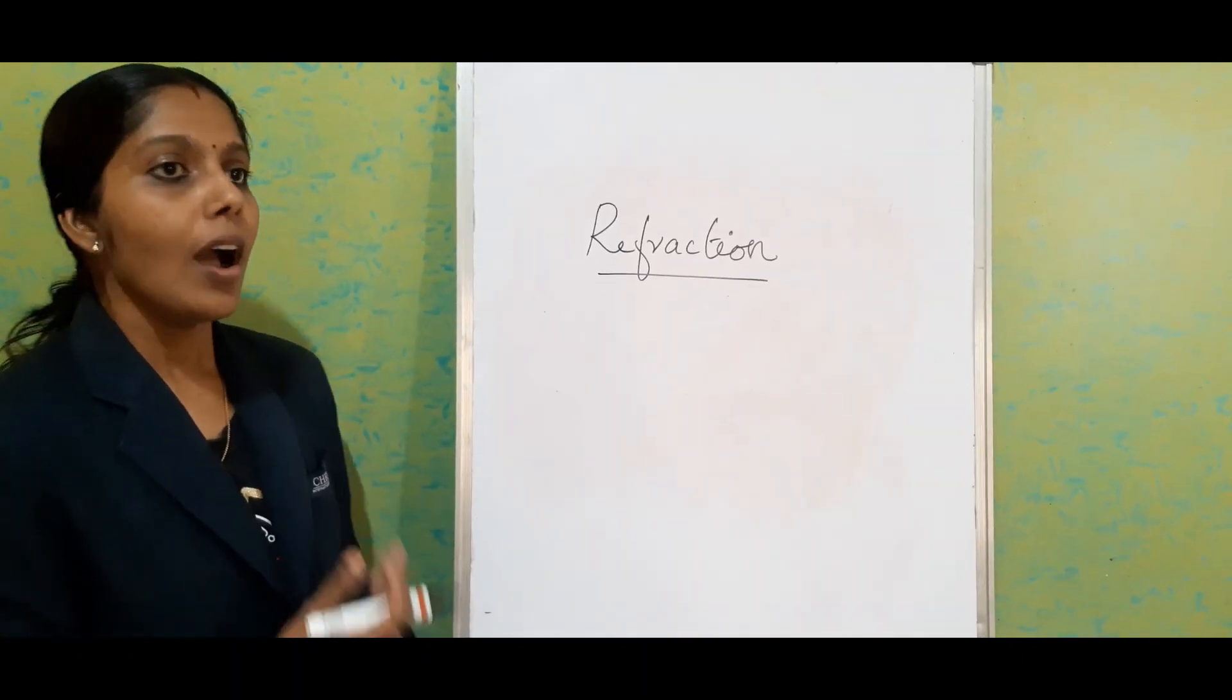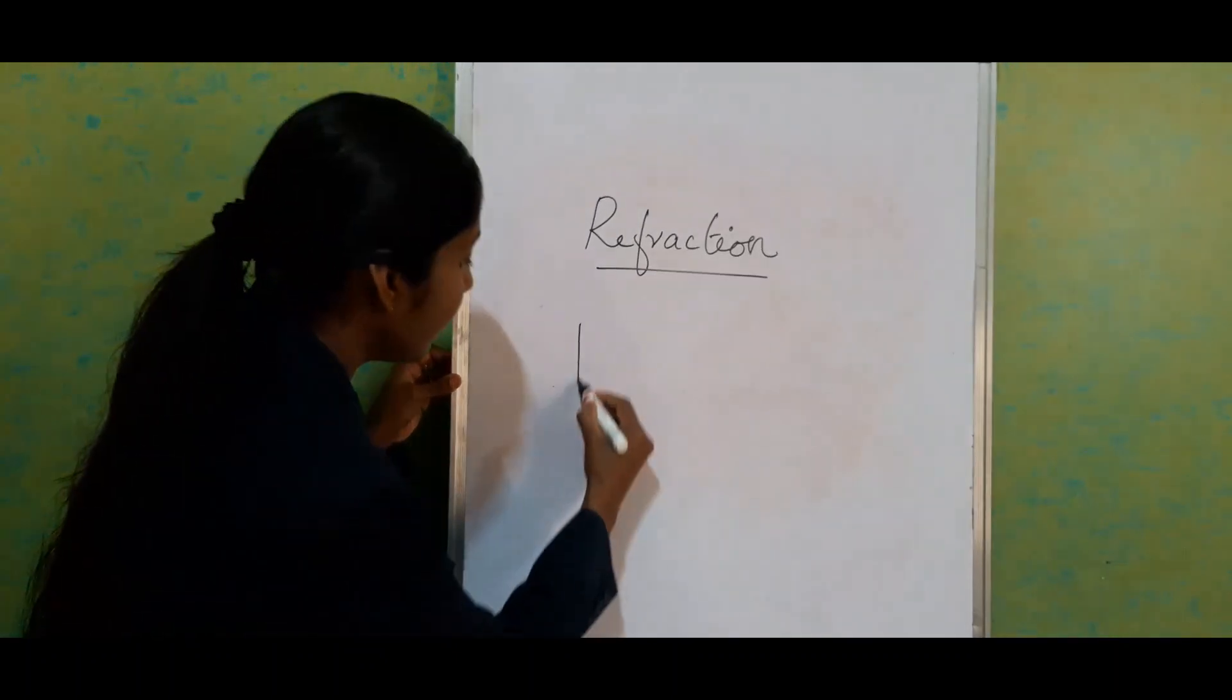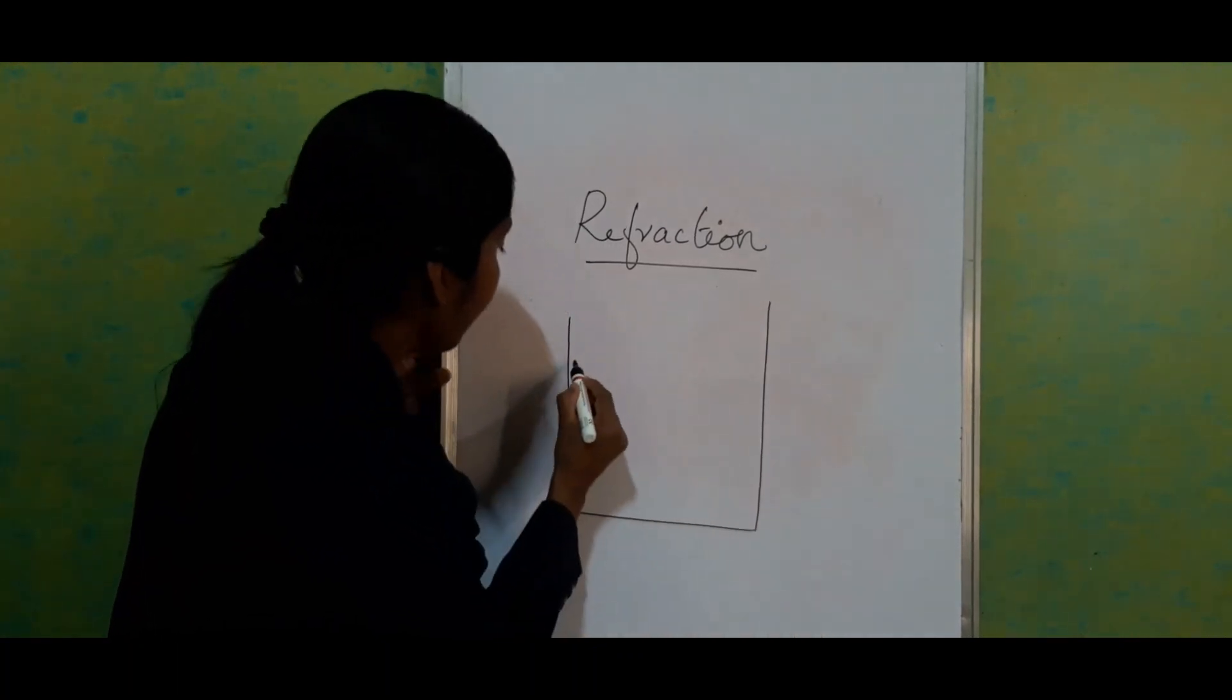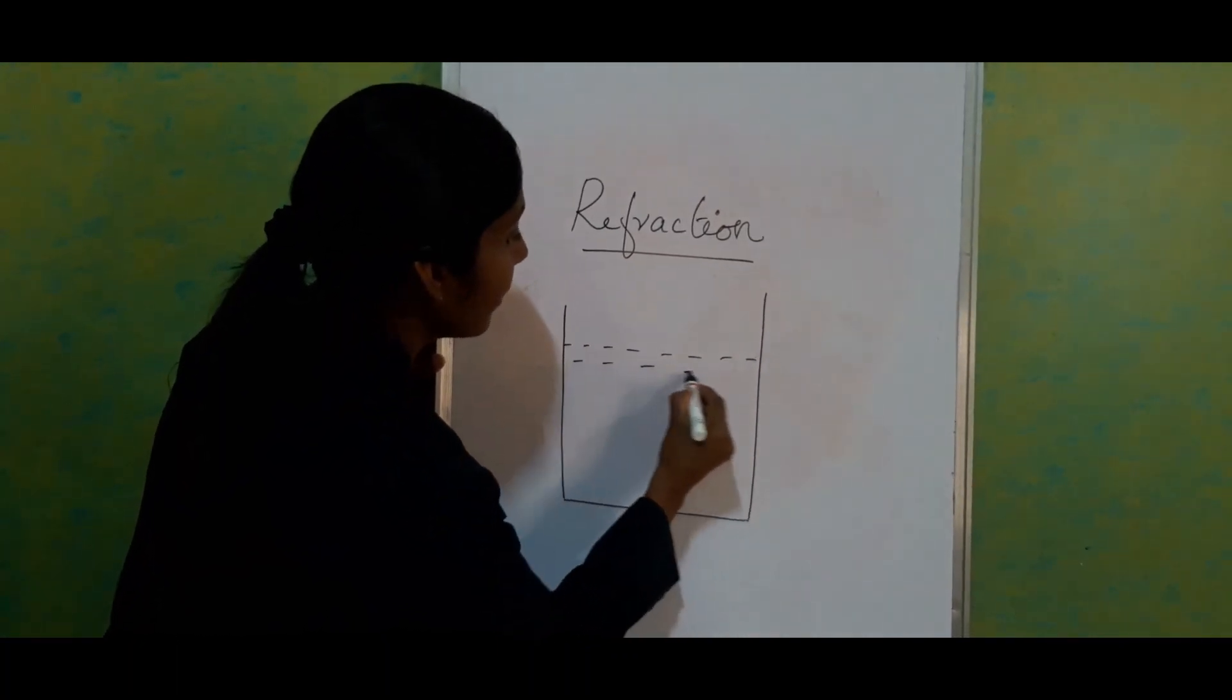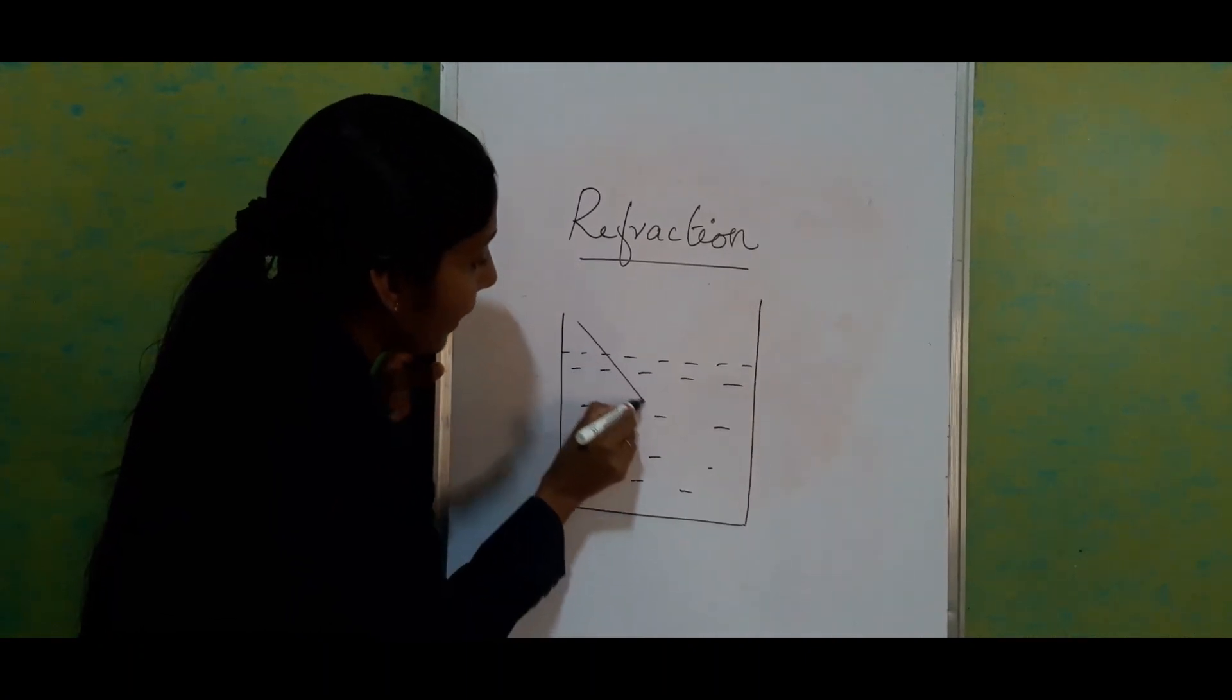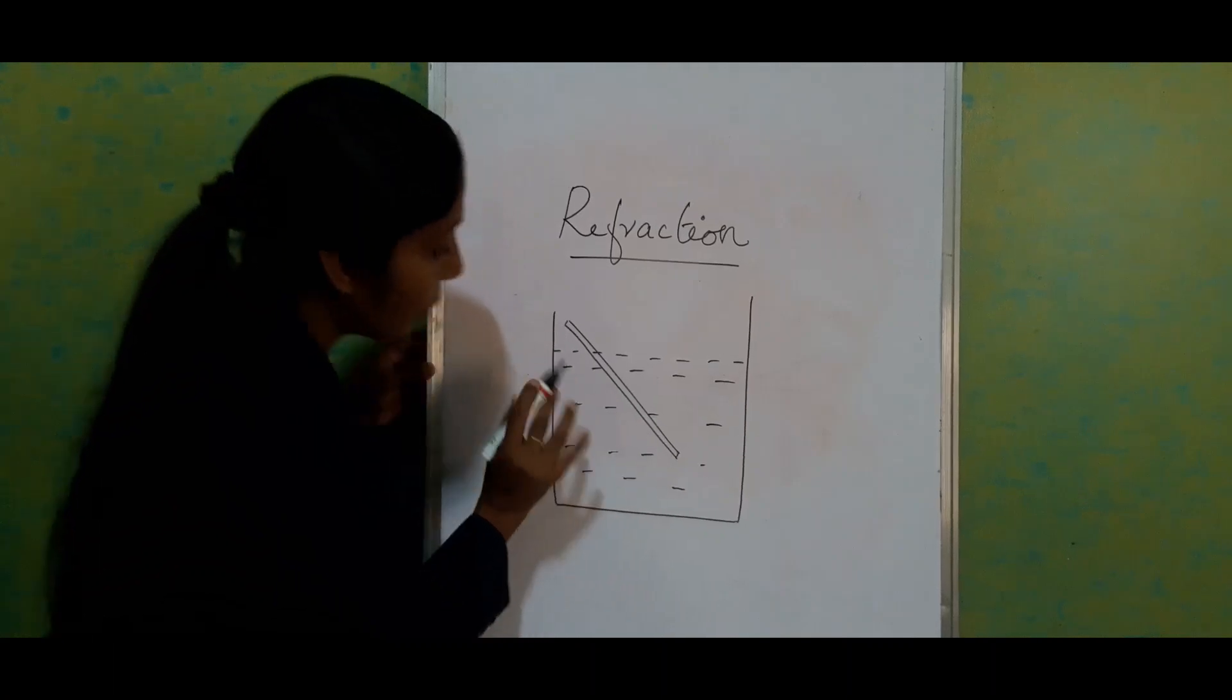We'll show what happened in the case of the experiment through a figure. Consider this is a tumbler and till here it's filled with water. This is a pencil, the original position of the pencil.